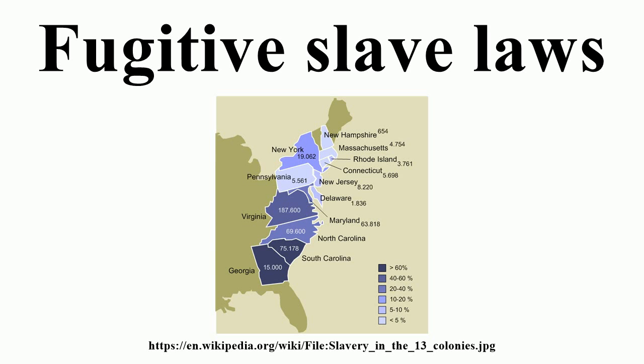1785 Attempt: There were two attempts at implementing a fugitive slave law in the Congress of the Confederation in order to provide slave owners with a way of recapturing escaped slaves. The Ordinance of 1784 was drafted by a Congressional Committee headed by Thomas Jefferson, and its provisions applied to all United States territory west of the original thirteen states. The original version was read to Congress on March 1, 1784, and it contained a clause stating that after the year 1800 of the Christian era, there shall be neither slavery nor involuntary servitude in any of the said states, otherwise than in punishment of crimes whereof the party shall have been duly convicted to have been personally guilty. This was removed prior to final enactment of the Ordinance on 23 April 1784.